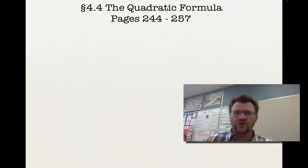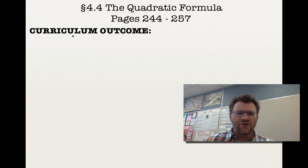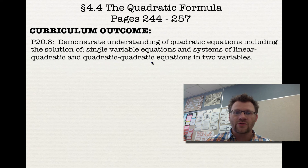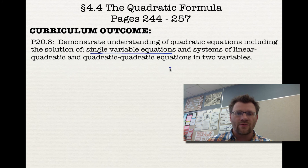Section 4.4 is the quadratic formula, found on pages 244 to 257 in your text. Our curriculum outcome is 20.8: to demonstrate understanding of quadratic equations, including the solution of single variable equations and systems of linear-quadratic and quadratic equations in two variables. We're just going to be talking about the first part today and leave the other two parts for later in the course.